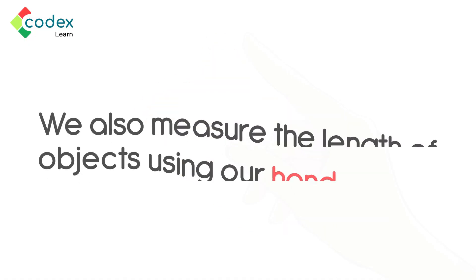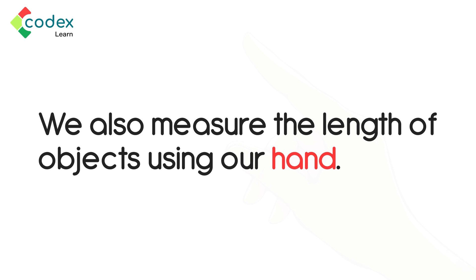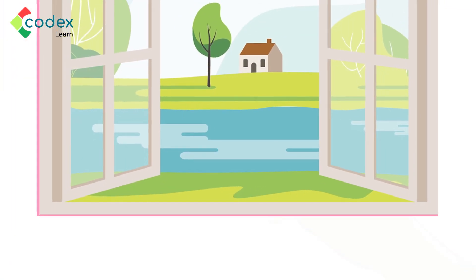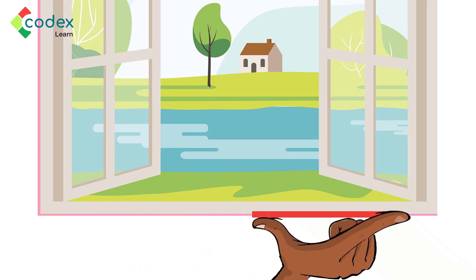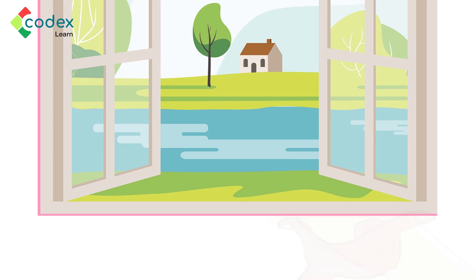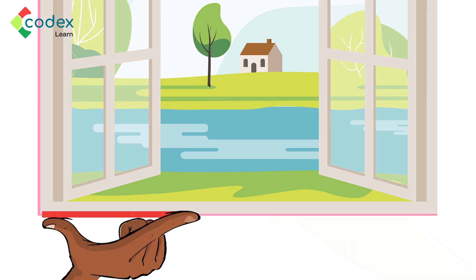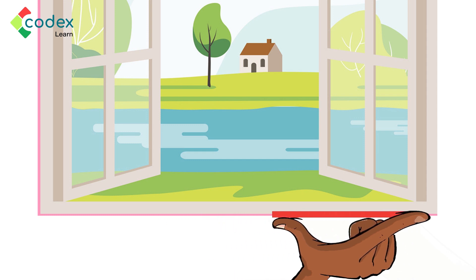We also measure the length of objects using our hand. Here is an example. Measure how wide the classroom window is using your hand. To measure the length of the window using our hand, we start from one end and place our outstretched finger in front of each other with no gap in between to the other end of the window. Let us count how many outstretched hands it will take us to go from one end of the window to the other with our hands in front of each other.